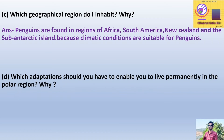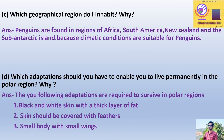Next question: Which adaptations would you need to live permanently in the polar region, and why? Answer: The following adaptations are required to survive in the polar region: first, black and white skin with a thick layer of fat; second, skin covered with feathers; third, small body with small wings.